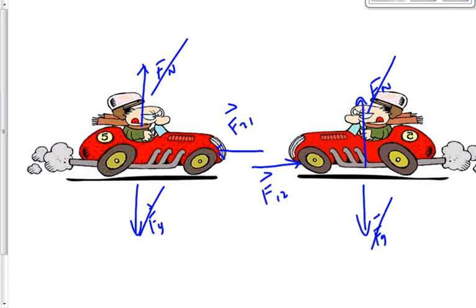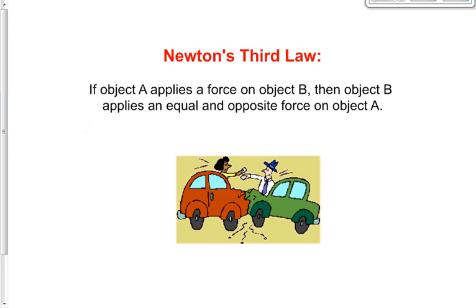So each car has a net force causing it to slow down. I prefer to state Newton's third law as: if object A applies a force on object B, then object B applies an equal and opposite force on object A. That's better because it reminds us there are two objects, so we don't trick ourselves into thinking there's no net force acting on a single object.